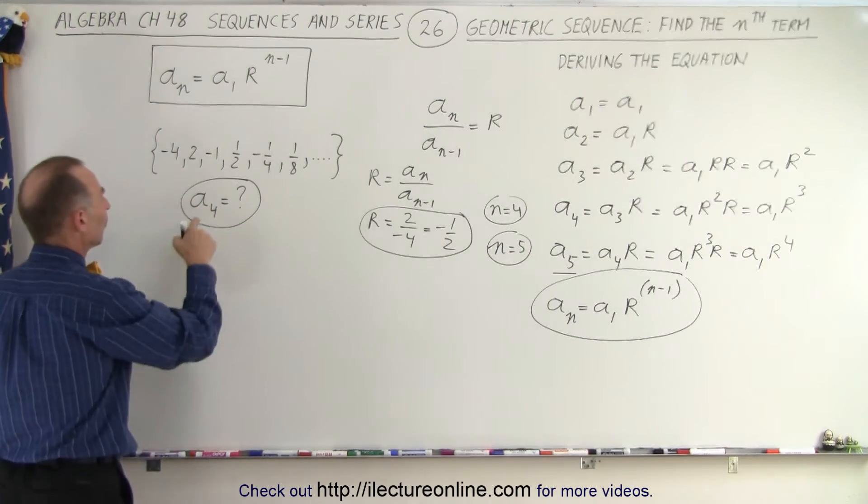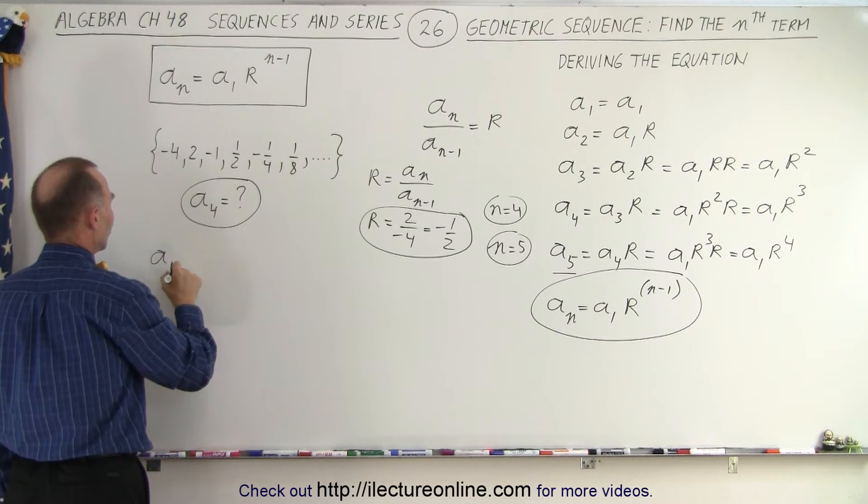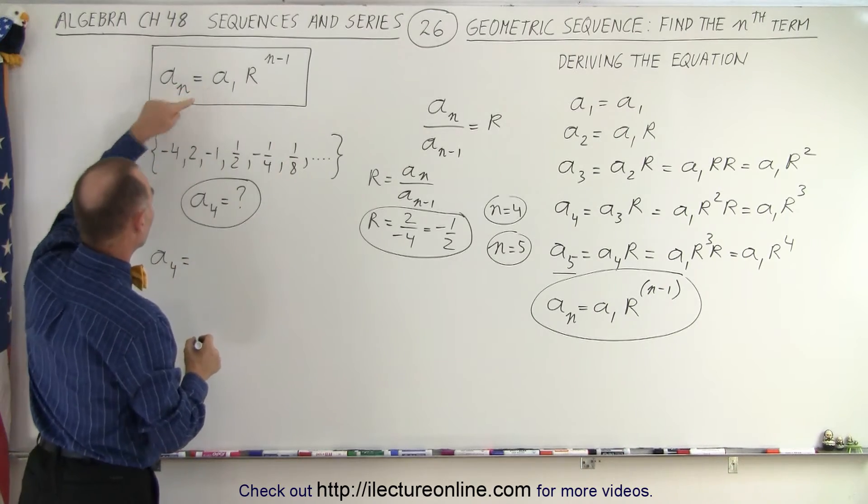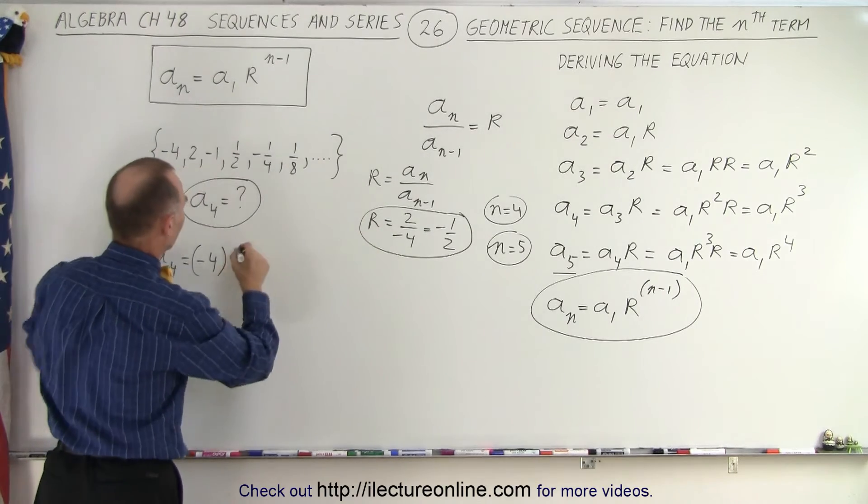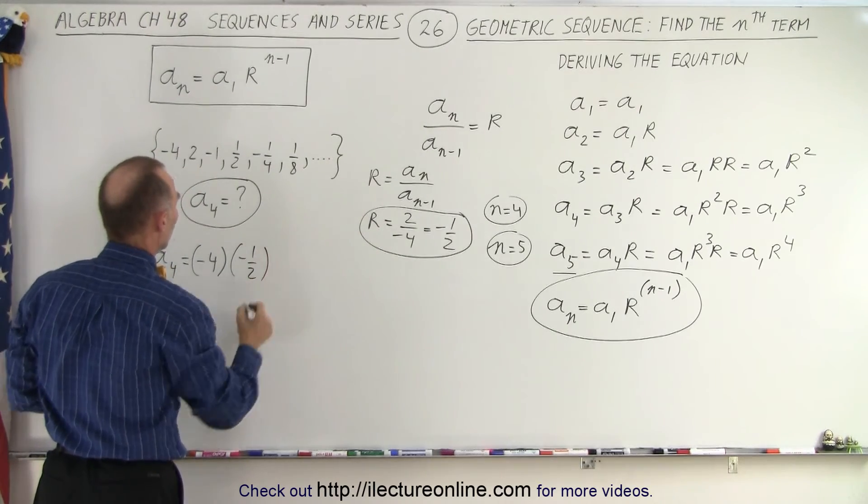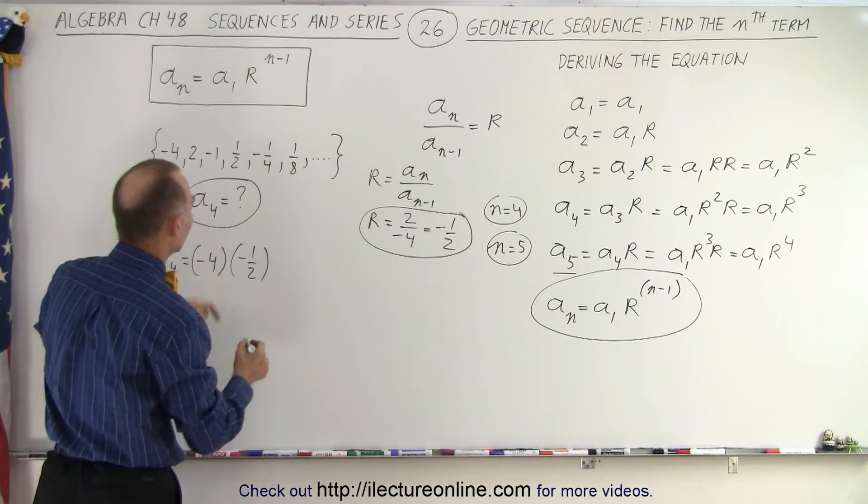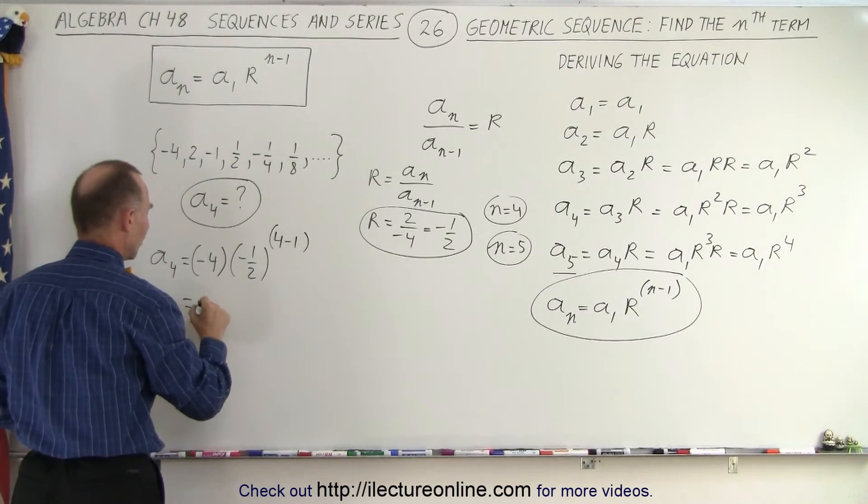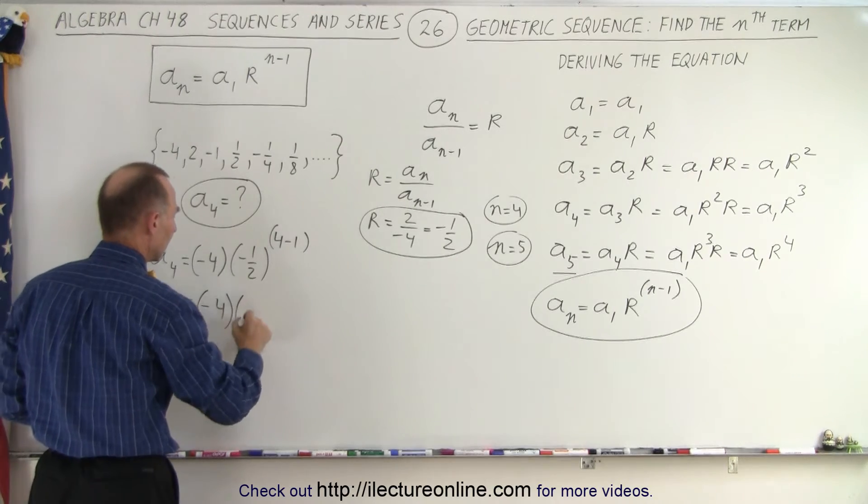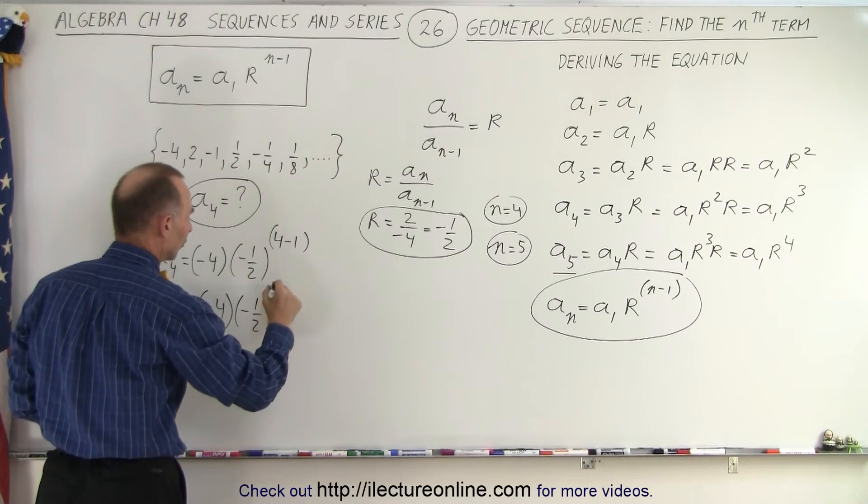Alright, now we're ready to find the fourth term. So we say a_4 is equal to a_1 which is minus 4, multiply times the common ratio which is minus 1/2 raised to the 4 minus 1 power.